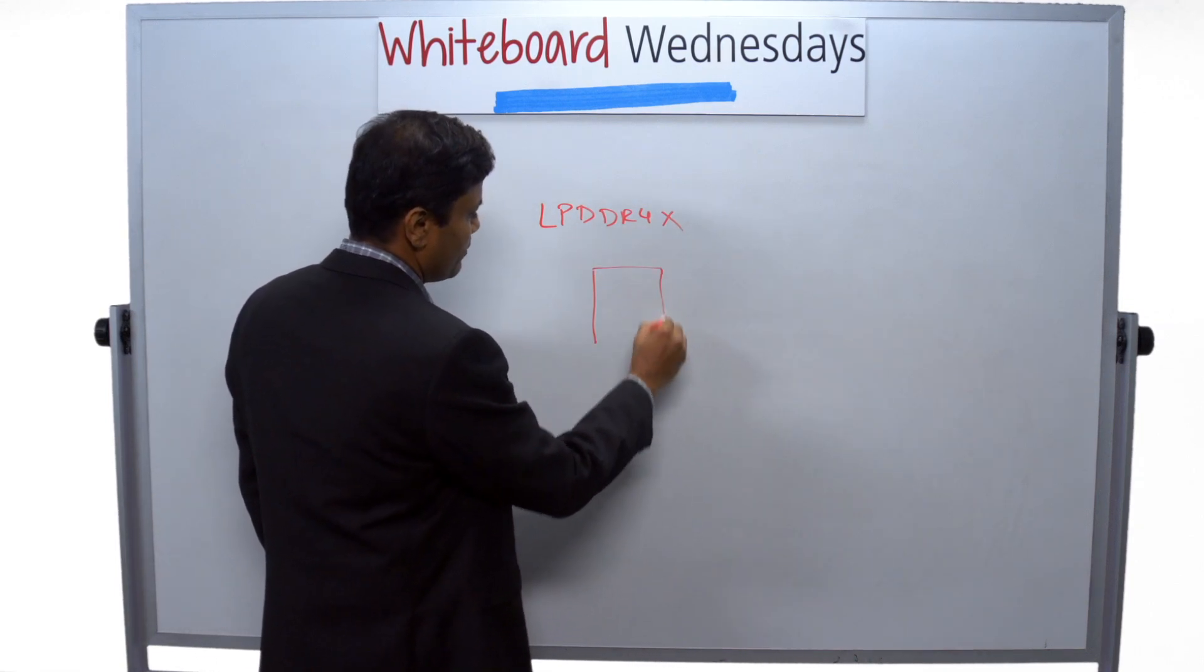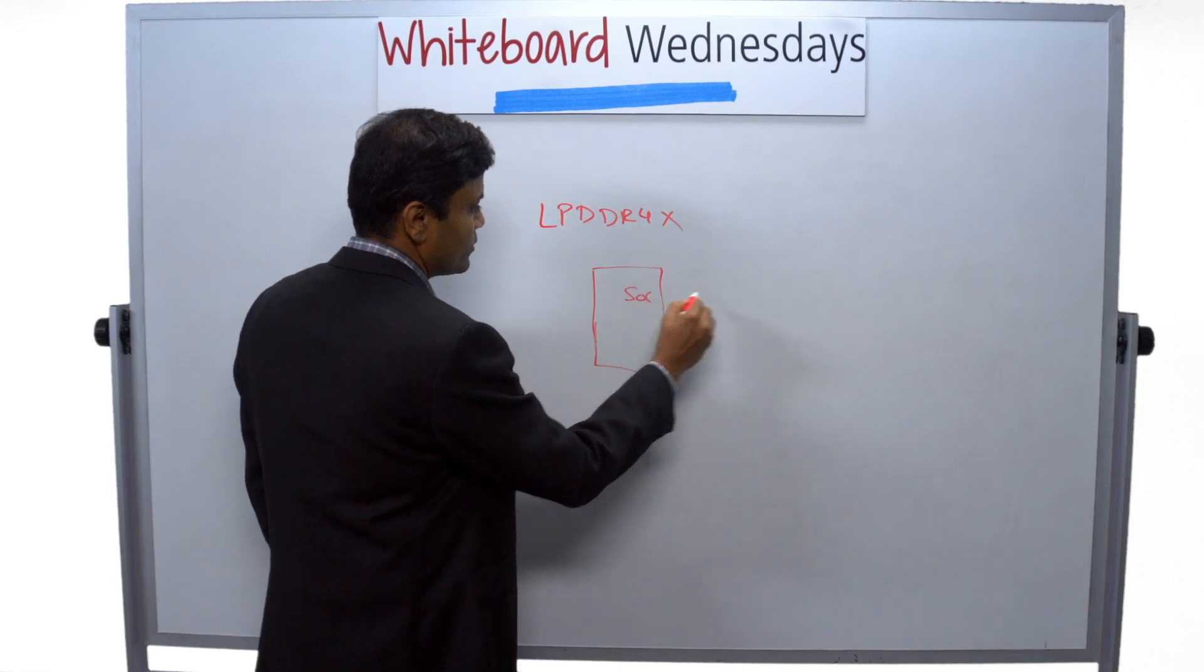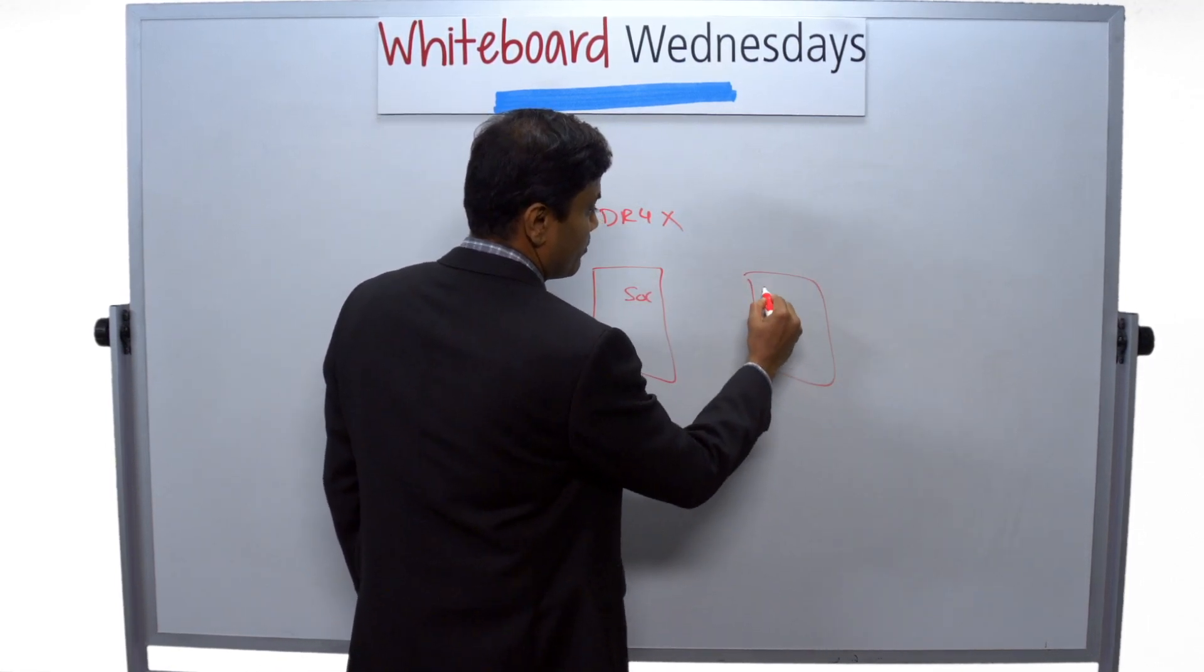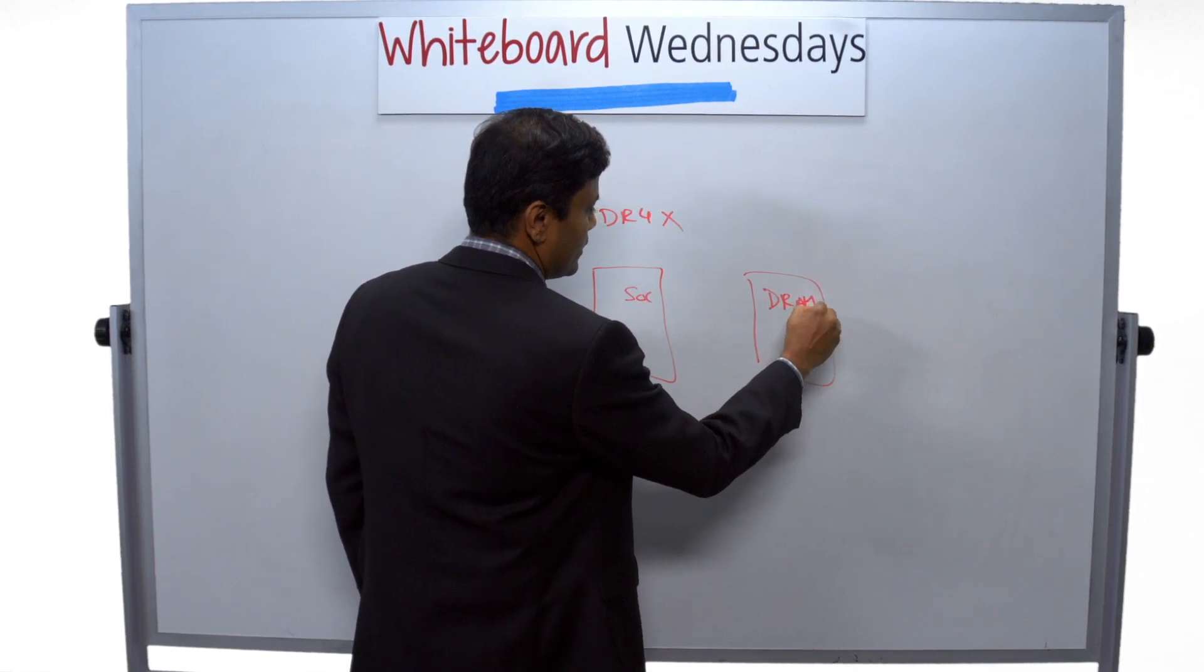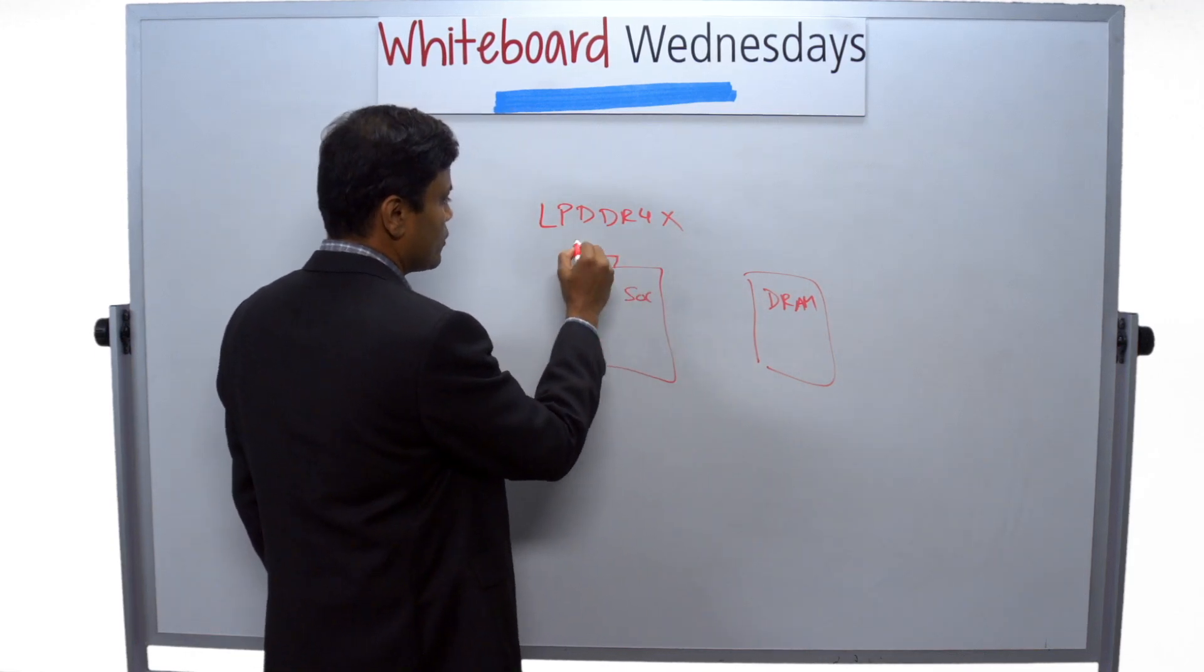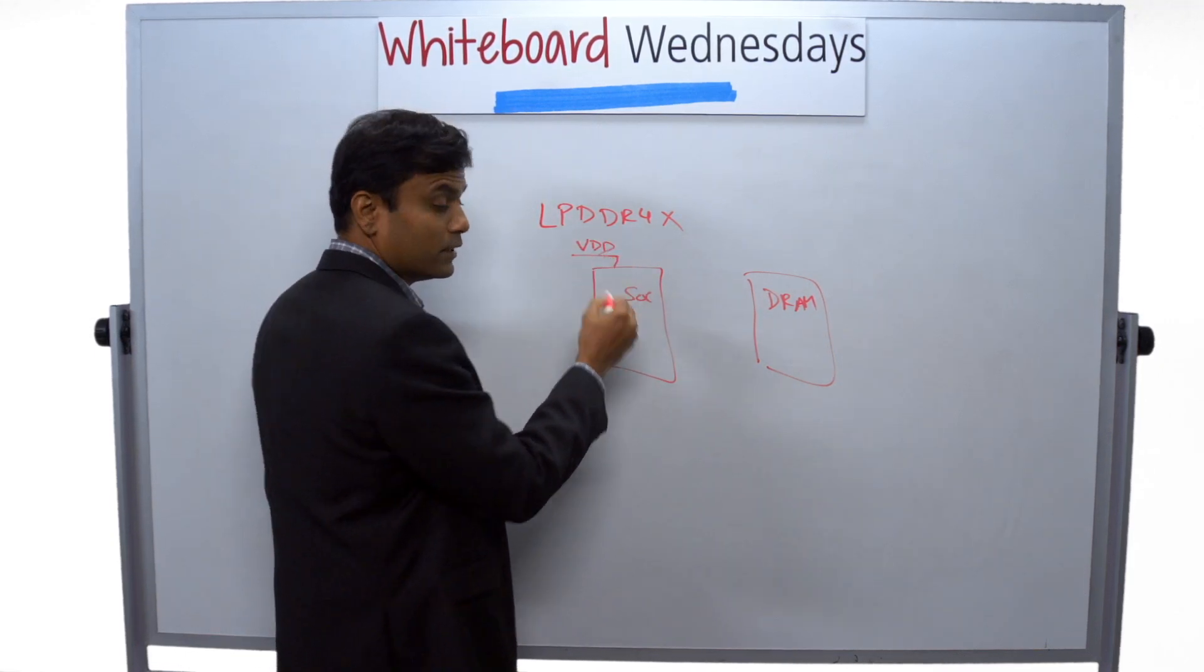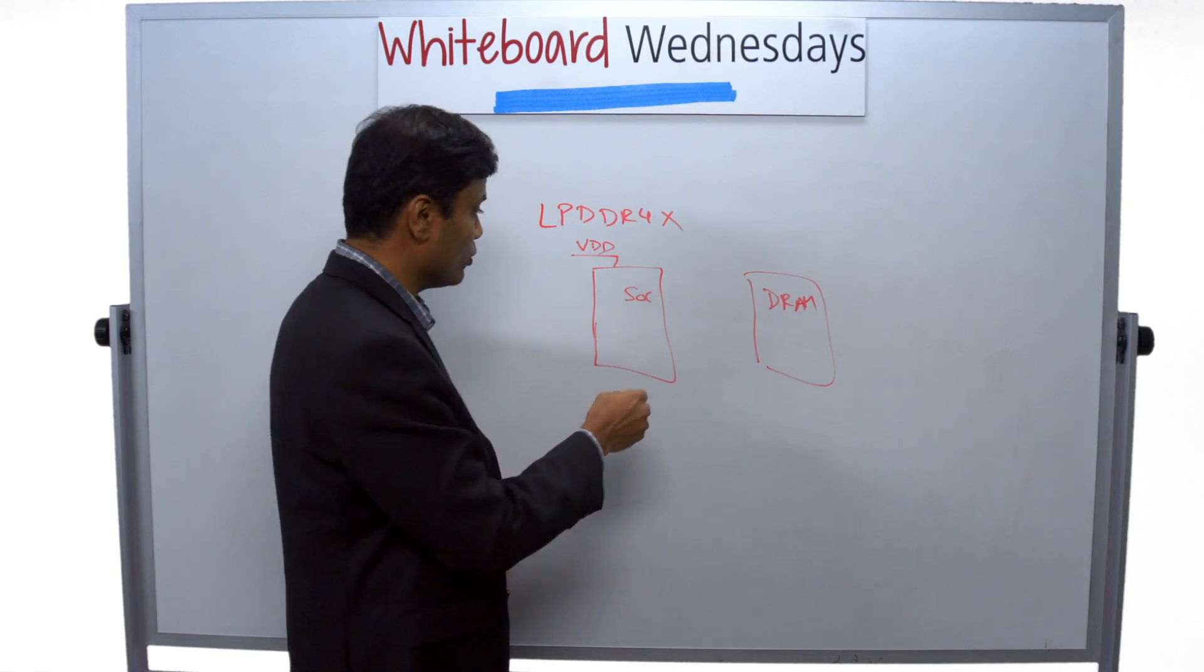If you look at a typical memory subsystem comprised of SOC and DRAM, there are multiple voltage domains. The SOC itself has a core supply called VDD that powers the entire chip as well as a memory controller.